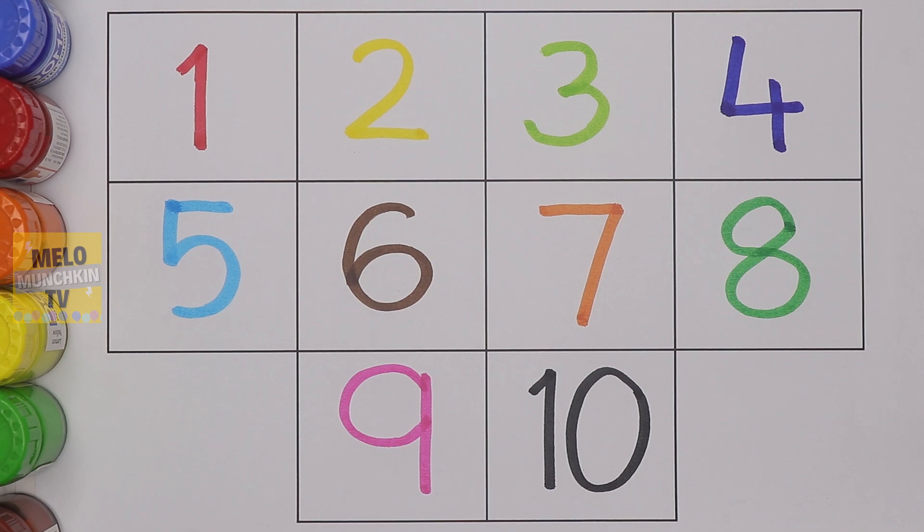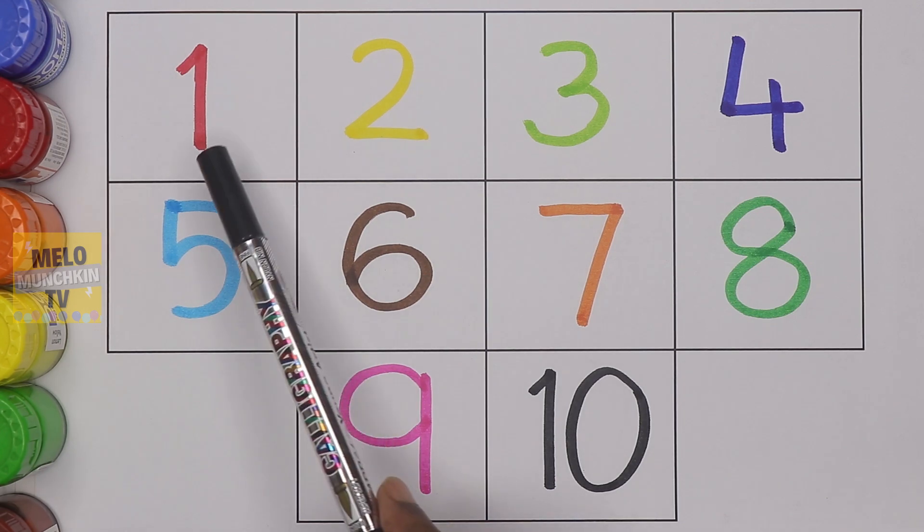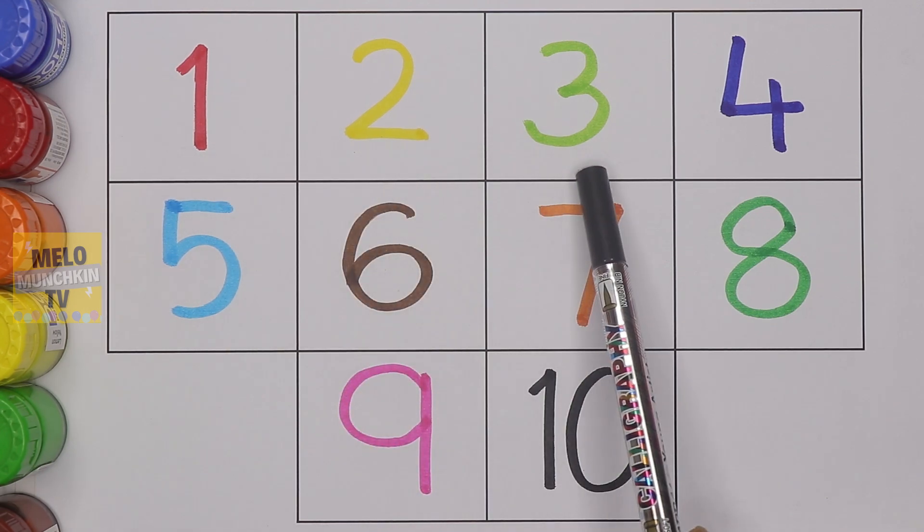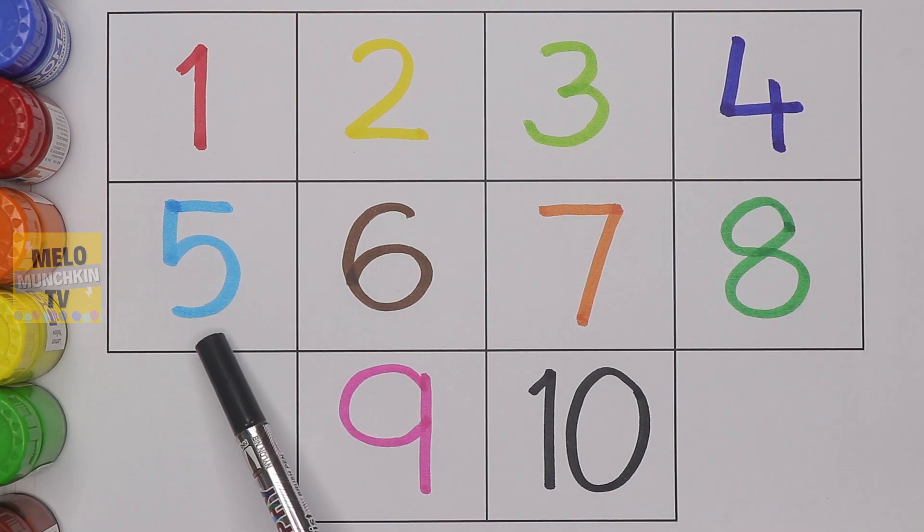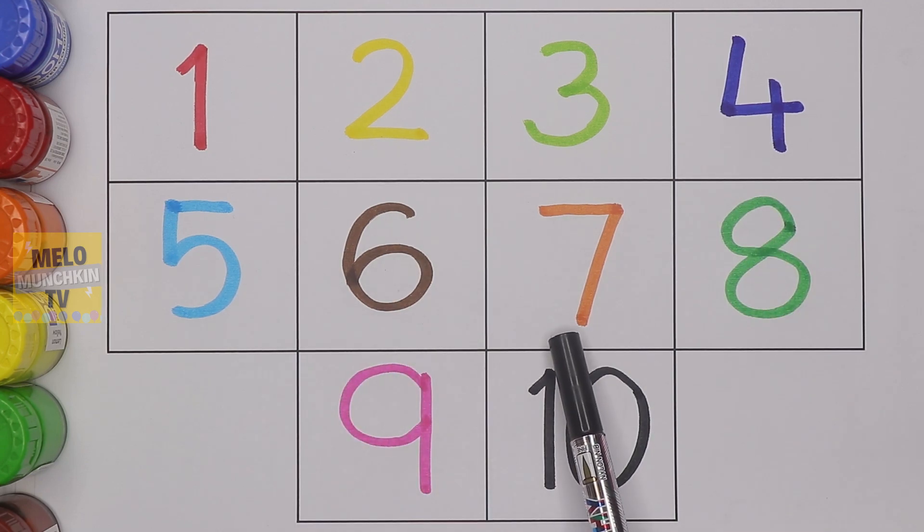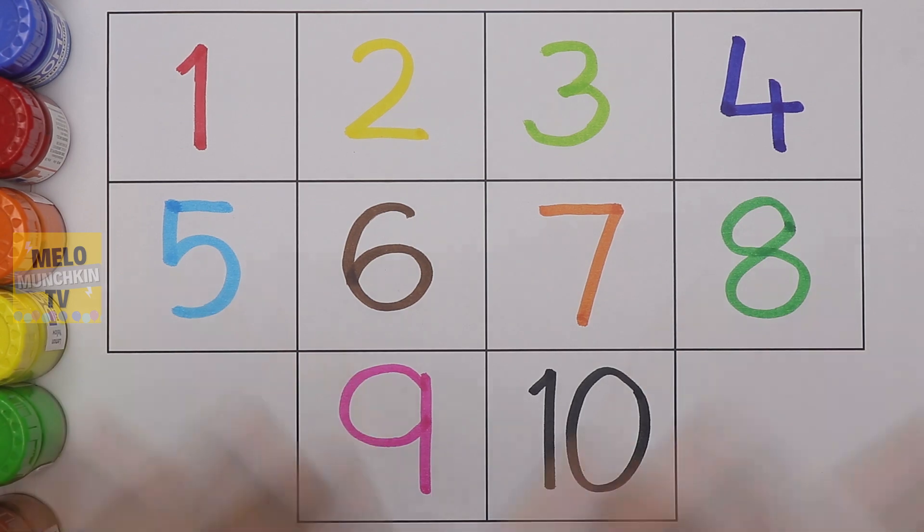So here we have completed our numbers from one to ten. Let's repeat once again: one, two, three, four, five, six, seven, eight, nine, and ten. So that's it for today kids. See you in my next video. Till then, take care and bye!